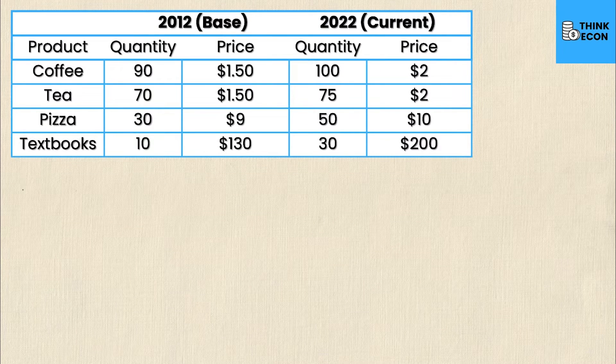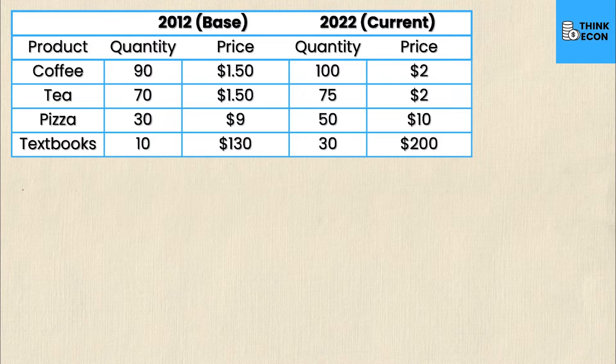As you can see, the table in front of us has four products: coffee, tea, pizza, and textbooks. We are assuming that all of these are final goods, so they would be included in the GDP calculation.